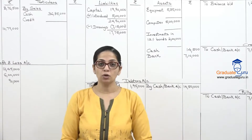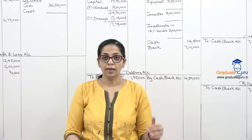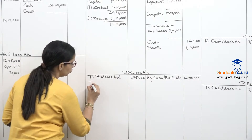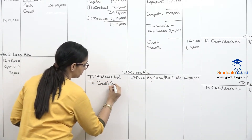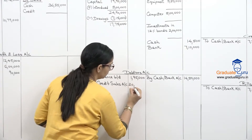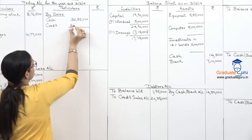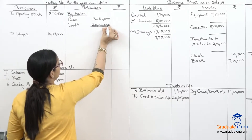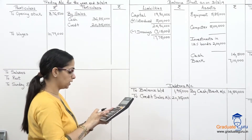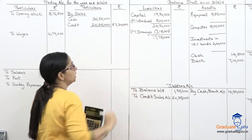Now for other transactions, we give double effect. First is credit sales — debtors account debit to sales account. In debtors I write 'to credit sales' twenty lakh thirty five thousand. In the trading account under sales, I add credit sales twenty lakh thirty five thousand. Total sales: thirty six lakh eighty five thousand plus twenty lakh thirty five thousand equals fifty seven lakh twenty thousand.